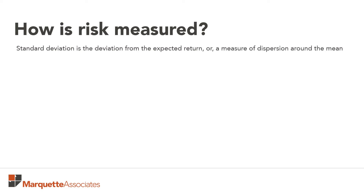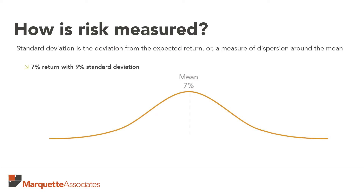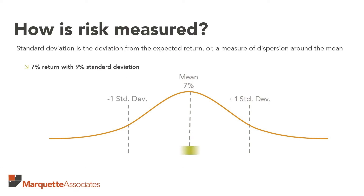In this particular example, the mean is the expected return of 7% and the standard deviation is 9%. So one standard deviation above the mean would be 7 plus 9%, or 16%. One standard deviation below the mean would be negative 2%. Investors must balance the upside potential of standard deviation alongside the downside potential of standard deviation.